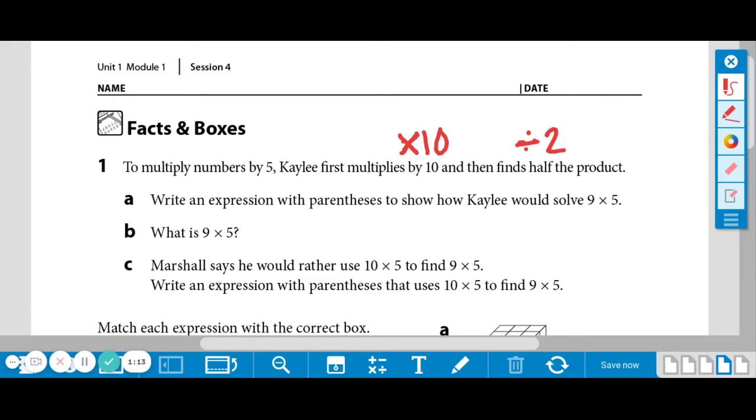So rather than multiply 9 by 5, Kaylee would take 9 and multiply it by 10. We got that from above. And then divide by 2. Why that works is because by dividing 10 by 2, that is 5. So the numbers, the values will still come out the same. We're just manipulating how we get there.